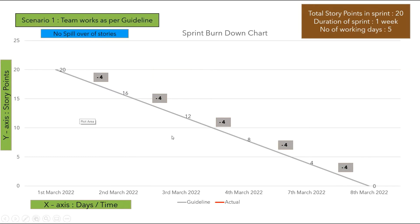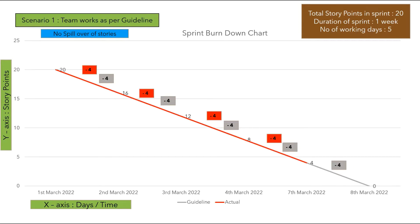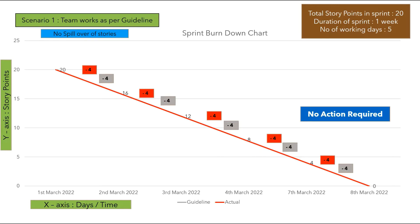In Scenario 1, the team works exactly as per the guideline. Every day, the team burns down exactly 4 story points so that remaining story points reach zero by the end of the sprint. The actual line completely covers the guideline. All user stories are successfully completed, so no action is required in this scenario.